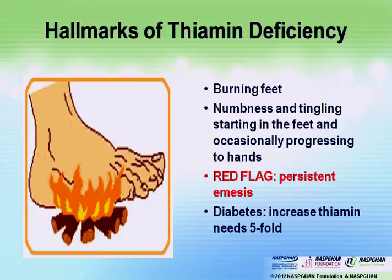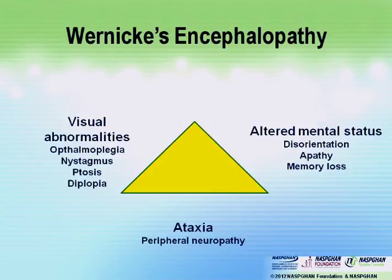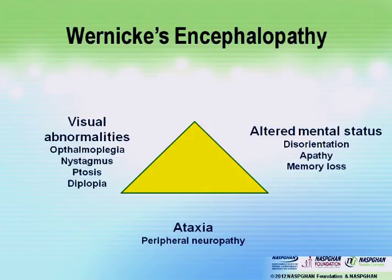The red flag is somebody with vague symptoms and persistent emesis. When they come in the hospital and you hang D10 or D5 half normal saline, they're not going to do very well. This can proceed on to Wernicke's encephalopathy — which we don't typically see in pediatrics, but the series from Cincinnati did report a few patients — with ophthalmoplegia, nystagmus, ptosis, and diplopia, because thiamine is required for axons and myelin sheaths.